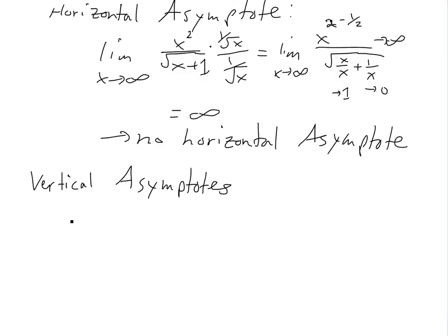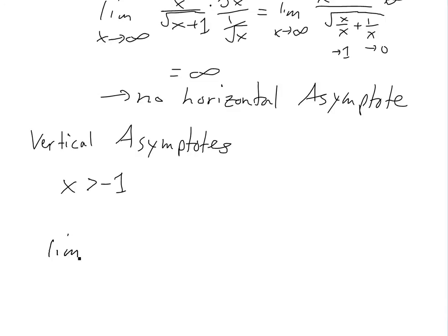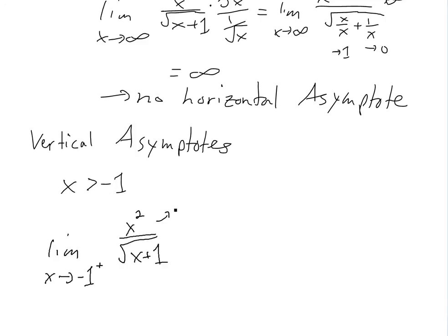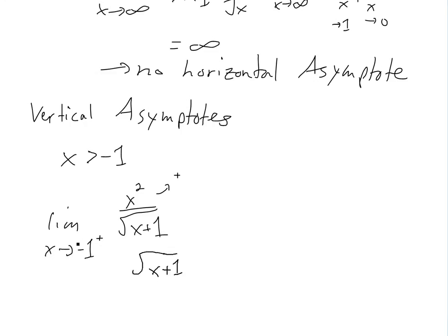To find vertical asymptotes, we see where the function is not defined. The function is not defined at x equals negative one (the endpoint of the domain). We take the limit as x approaches negative one from the right. Looking at x squared over square root of x plus one: the top is always positive, and from the right side x plus one is positive but approaches zero, so something divided by zero gives positive infinity. This is a vertical asymptote at x equals negative one.